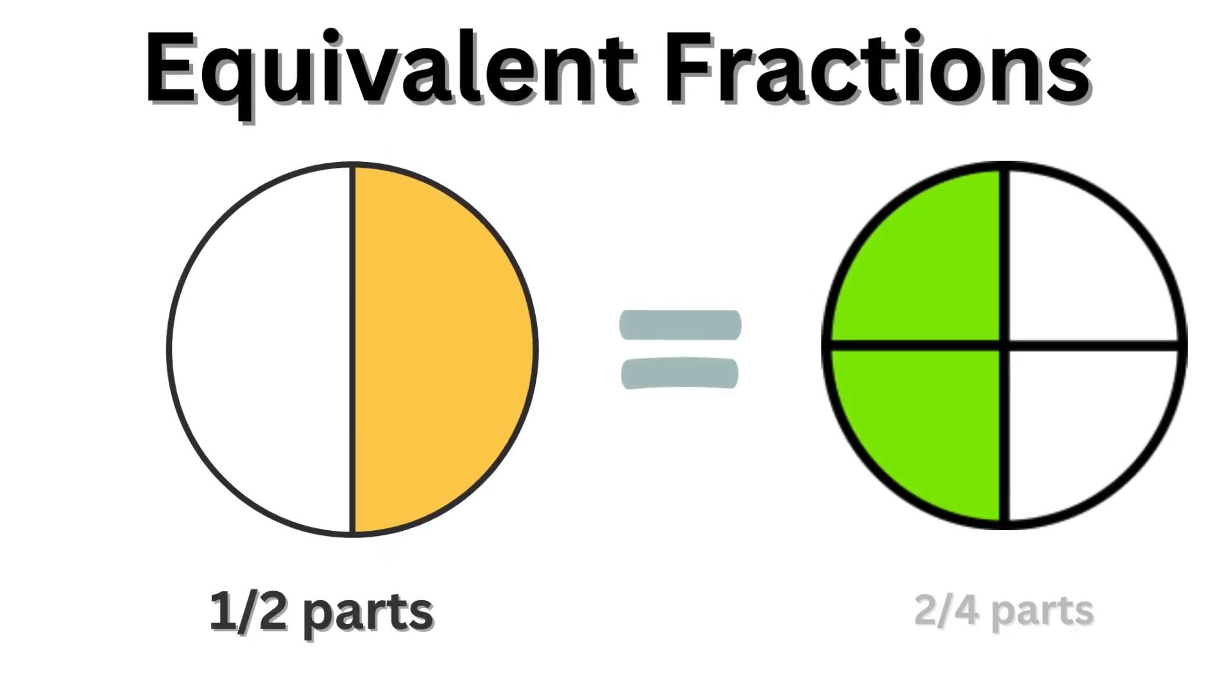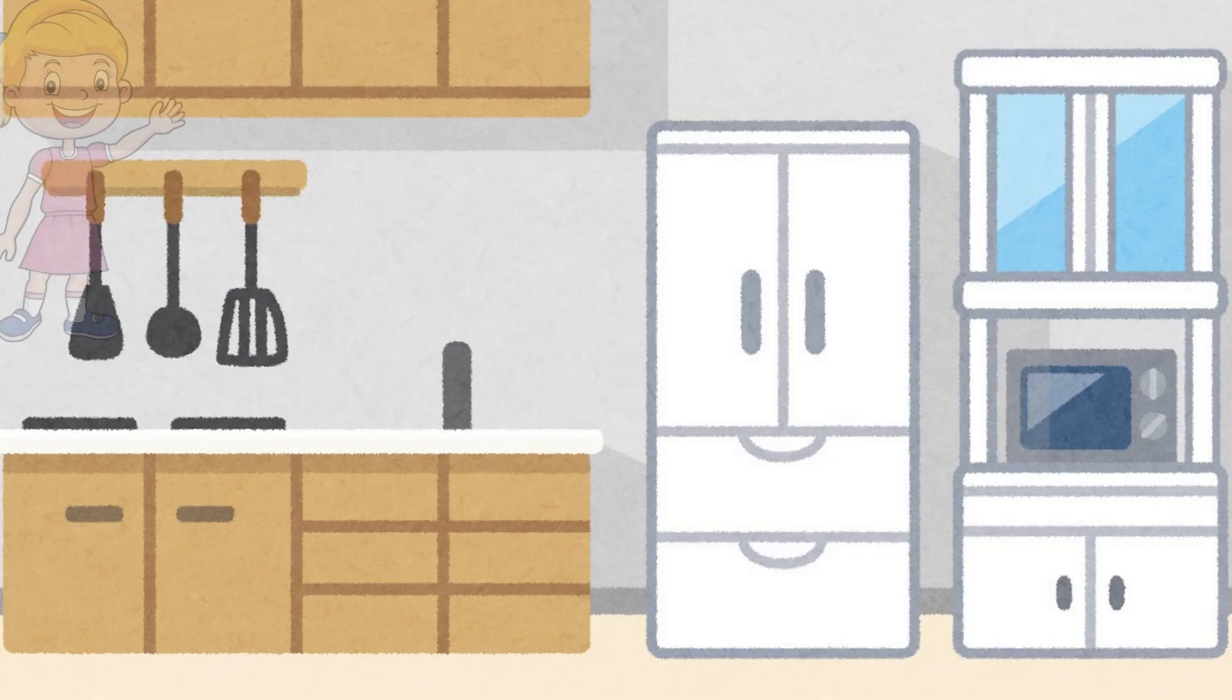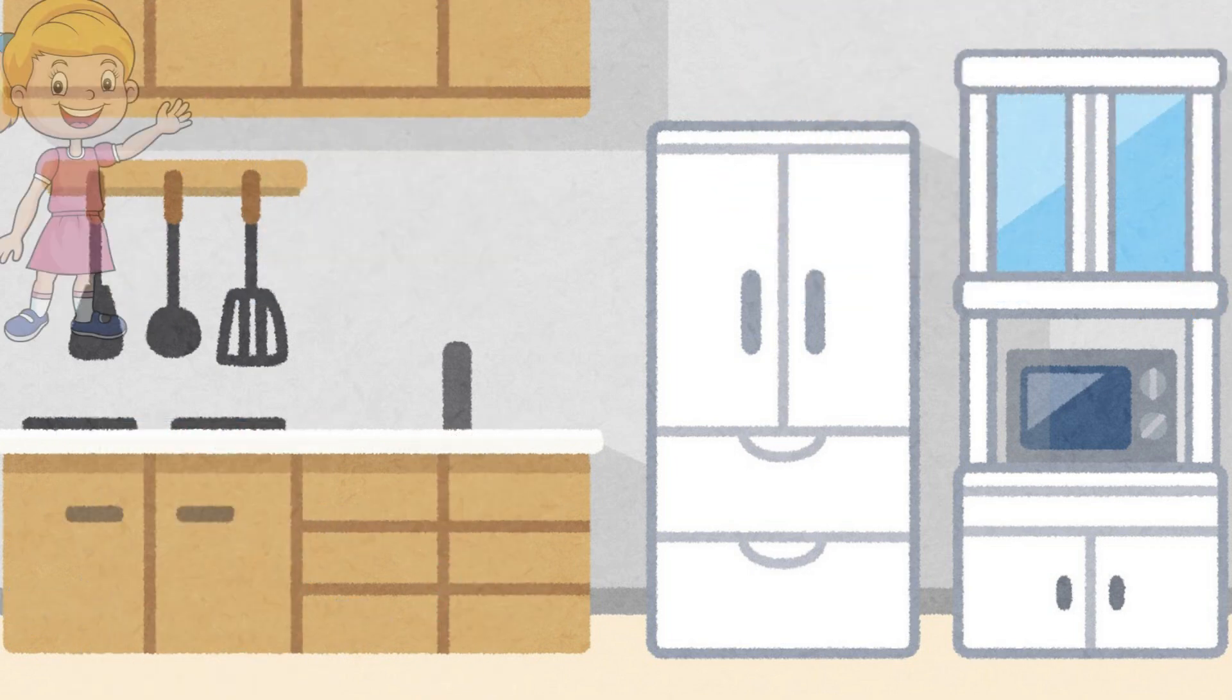Let's use the following illustration to understand equivalent fractions better. Imagine we have three pizzas, one for Anella, one for Bithia, and one for Jonan.